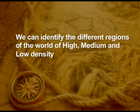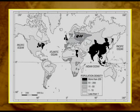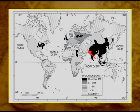We can identify regions of high, medium and low density on a world map. The given thematic map reveals five major densely populated regions of the world: East Asia — specifically coastal China; South Asia — predominantly most of India; Western Europe — including industrial clusters of this region; the east coast of the United States of America; and Southeast Asia.